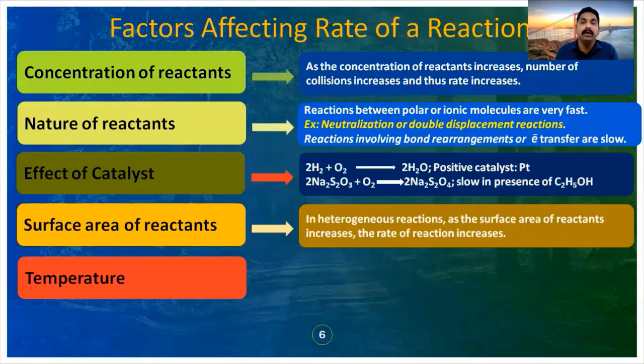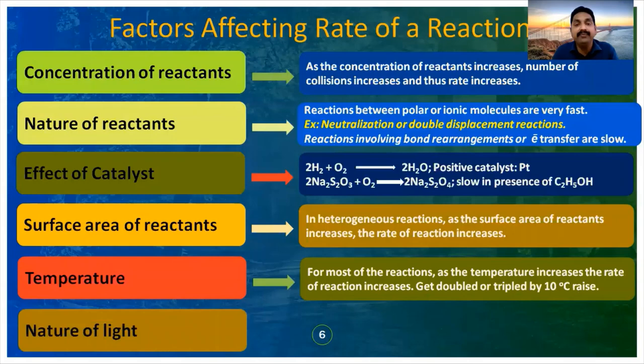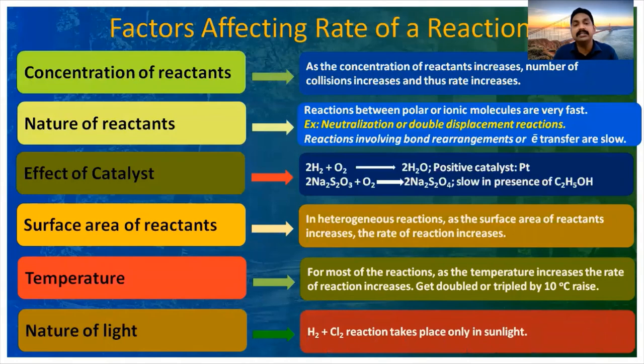One more factor affecting the rate of reaction is the nature of light. There are some reactions which happen only in the presence of light. For example, the reaction between hydrogen and chlorine cannot happen in normal light — it happens only in the presence of sunlight. So the nature of light also affects the rate of reaction.